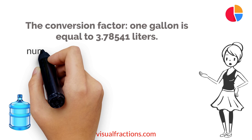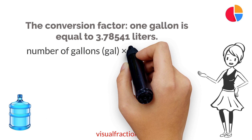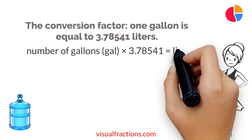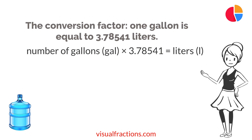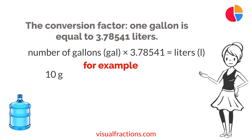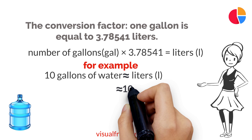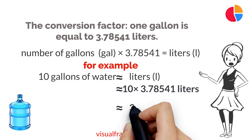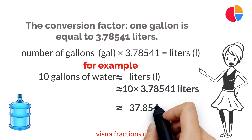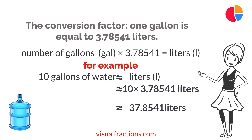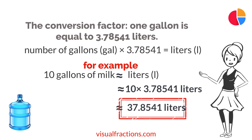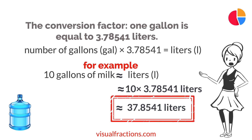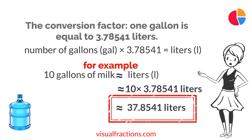To convert gallons to liters, just multiply the number of gallons by this factor. For example, if you need to convert 10 gallons of water, multiply 10 by 3.78541 to get approximately 37.8541 liters. That's it — your 10 gallons of water amount to around 37.8541 liters.